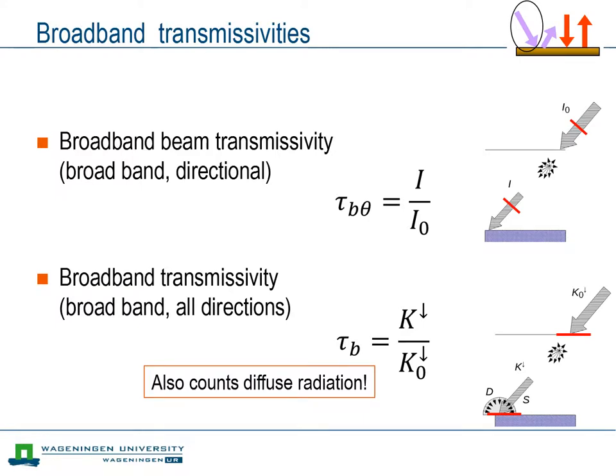Now we no longer consider radiation flux densities through a plane normal to the solar beam, but rather through a plane parallel to the Earth's surface, both at the top of the atmosphere and at the surface. So at the surface, this implies that we look at the global radiation, that is the sum of direct and diffuse radiation.